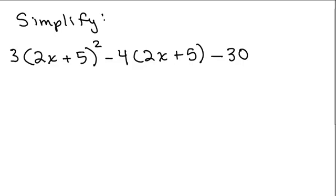All right, we're going to simplify this polynomial. When you simplify, basically what you're doing is using the order of operations. The first thing in order of operations is to simplify with grouping symbols or parentheses. But inside the parentheses, we have 2x plus 5 in two places. Those are unlike terms, so those are as simplified as possible.